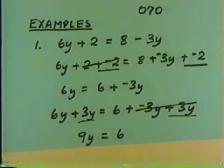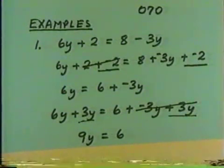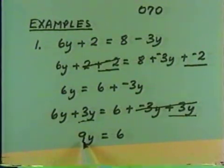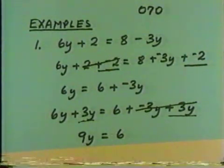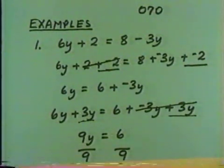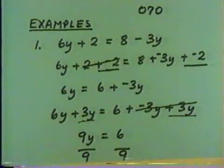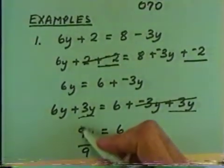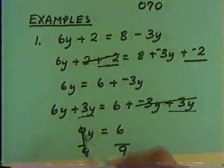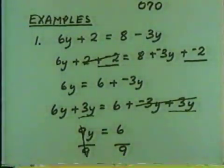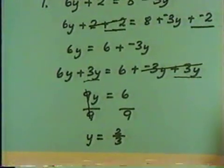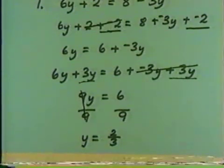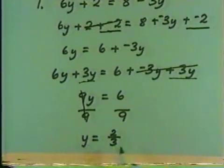We're almost to the stage of having variable equals constant, but we must eliminate the coefficient 9. Since 9 is multiplied by y, we divide by 9 to eliminate it. So we'll divide both sides of the equation by 9. On the left, the 9's cancel, giving us 1 over 1, and the 6 over 9 reduces to 2/3. And so our solution has become y = 2/3. Variable equals constant.